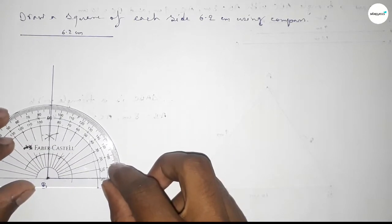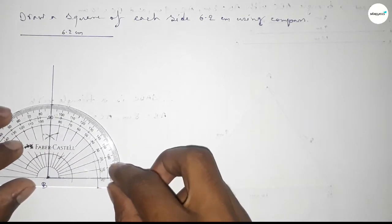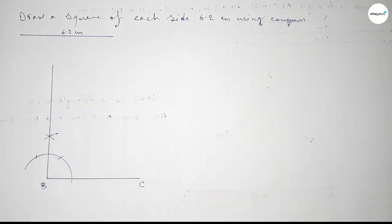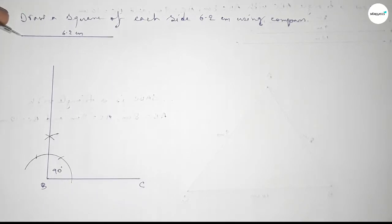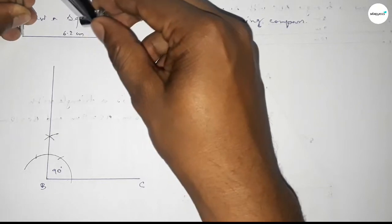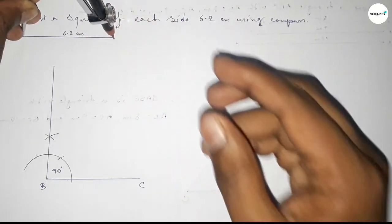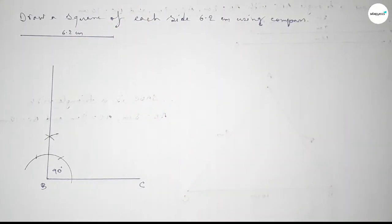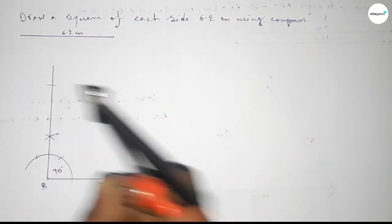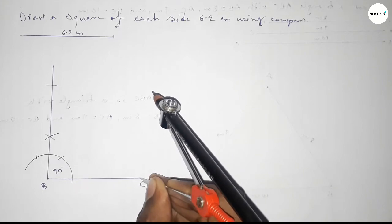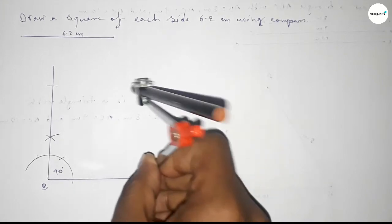This is perfectly a 90-degree angle. Now taking the length 6.2 centimeters by using the compass, putting the compass on point B and cutting here.